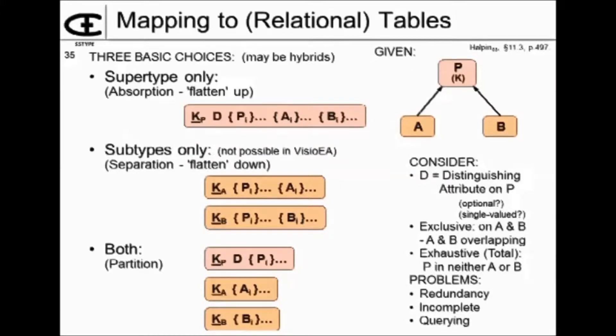If A and B overlapping, then you've got a real problem with the subtypes only. Because the same member of a population is going to appear in both of them.